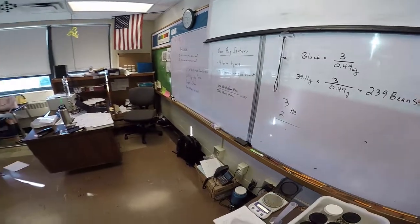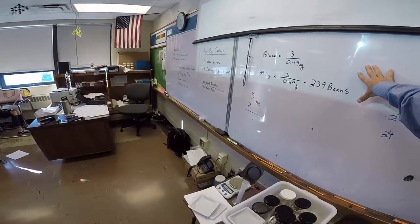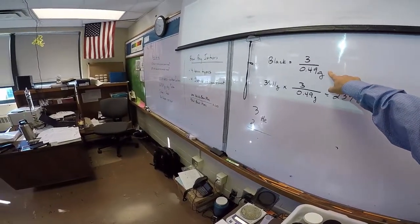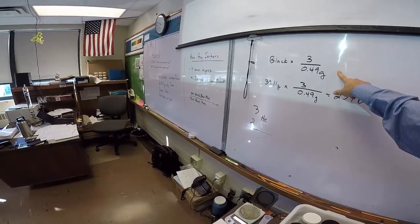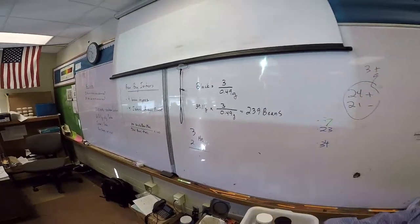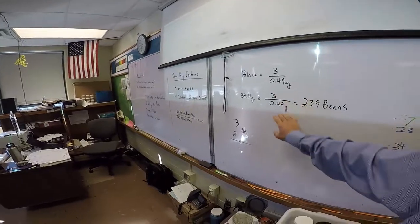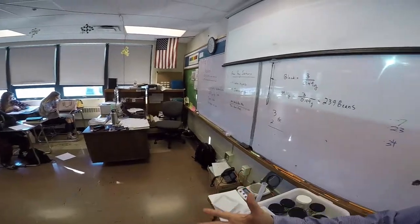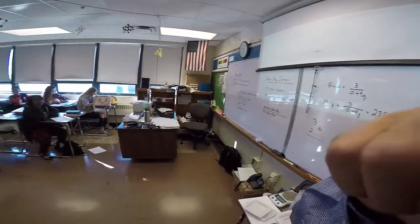So one bean variety by the total bean mass times 100. And here's an example of how you can count the beans, because they ask you to count the beans. So you just take three of them, three black beans, put it on the balance. Let's say it weighs 0.49. You put all your black beans on the balance. Let's say it weighs 39. You do your conversion factor here, dimensional analysis. You get 239 beans. So you can count these pretty quickly without individually counting all of them.